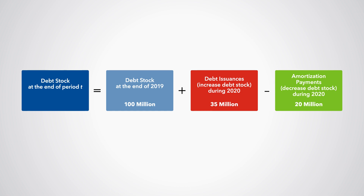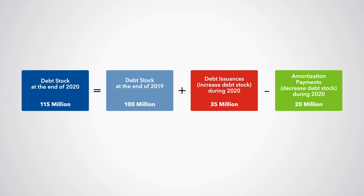Using this information, you report to the Ministry that Macroland's debt stock at the end of 2020 will be 115 million Macroland pesos, equal to the stock at the end of 2019 of 100 million Macroland pesos, plus debt issuances during 2020 of 35 million Macroland pesos, minus debt amortizations during 2020 of 20 million Macroland pesos.